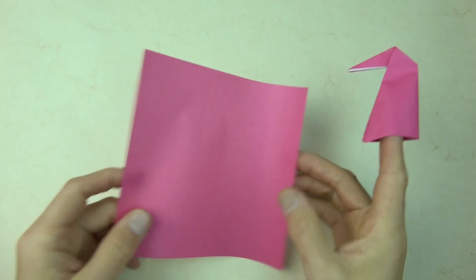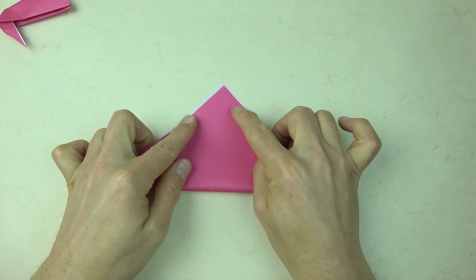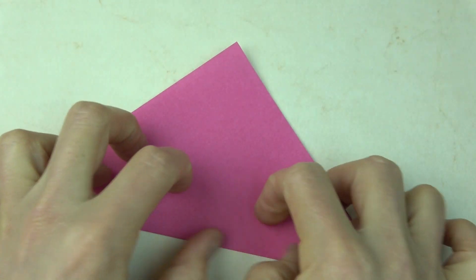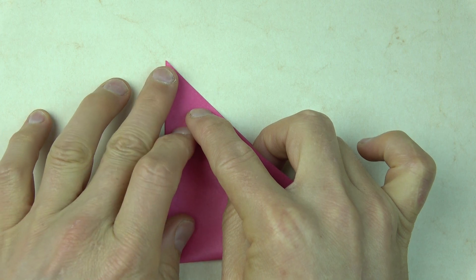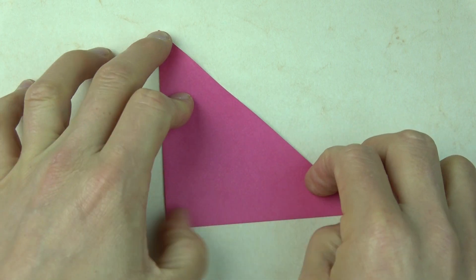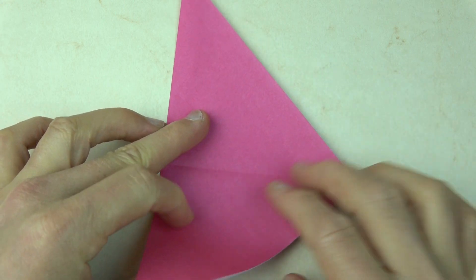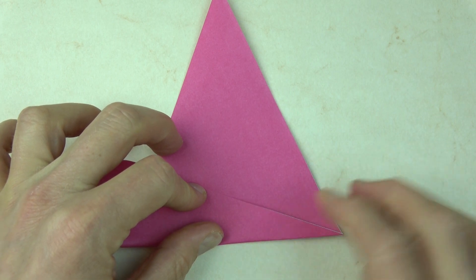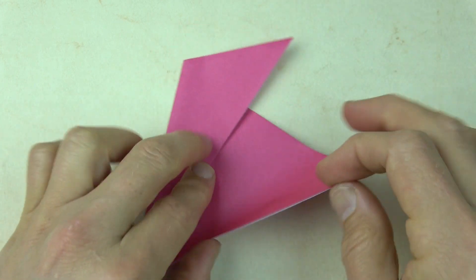Alright now for the head. So for this it starts the same way. So fold in half diagonally. And rotate and fold in half in this direction. And unfold and fold this edge to the crease. And repeat on this side.